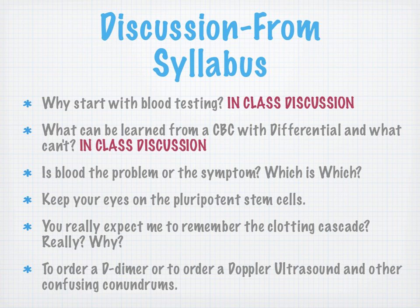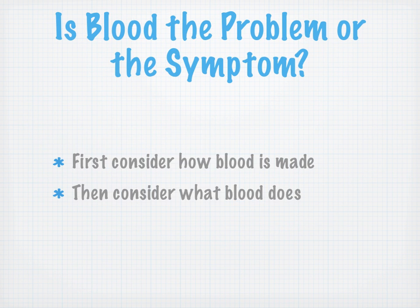So, hematology review. Let's look at the discussion from the syllabus. We asked some questions: why start with blood testing, and what can be learned from a CBC with differential and what can't be — these were in-class discussions this week. The next point we're going to address is: is blood the problem or the symptom, and which is which? Also, keep your eyes on the pluripotent stem cells. The clotting cascade and the question of D-dimer versus Doppler ultrasound will be answered in week five.